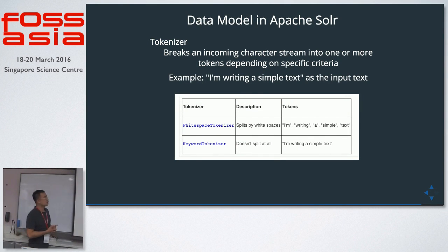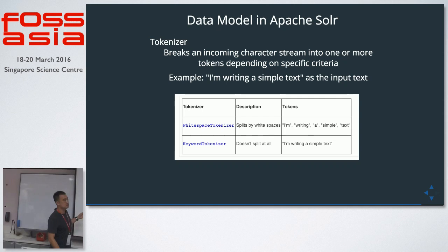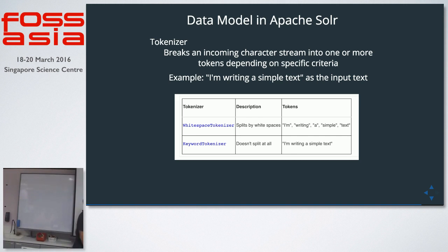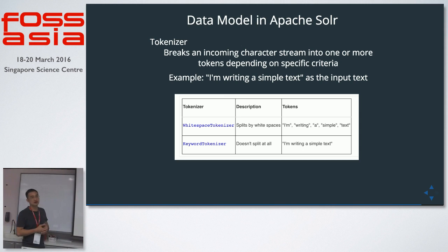What the tokenizer does is break a sentence into a stream of tokens. For example, if the input is a simple text sentence, the whitespace tokenizer will break it down by whitespace. If you use the keyword tokenizer, it doesn't split anything, so the whole sentence is treated as one keyword. There are many more tokenizers in the Solr library — you can check the online documentation to find them.